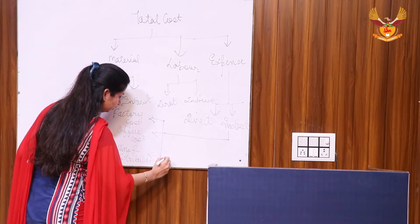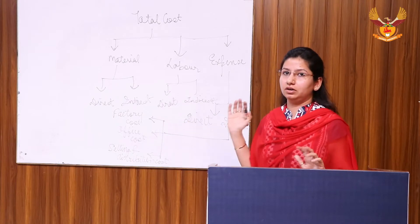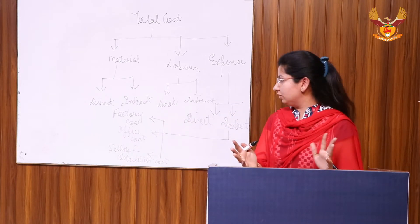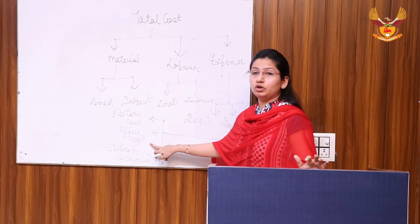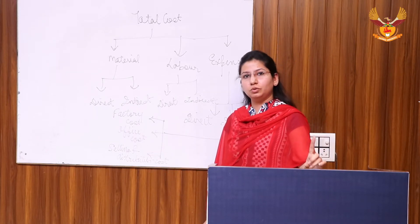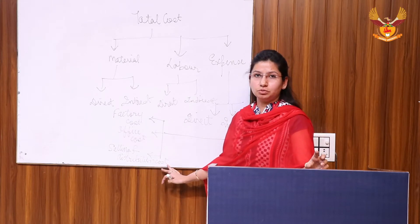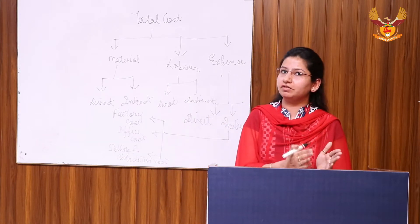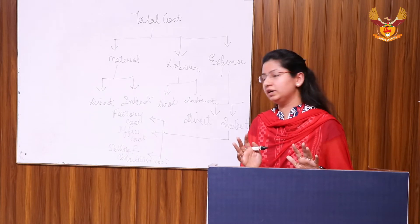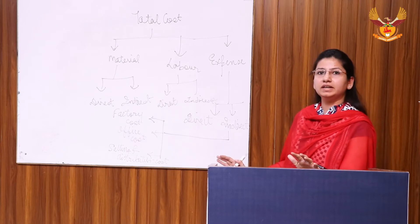Factory cost includes everything related to maintenance and any kind of machine-related charges. Office cost includes all office expenses such as furniture and the salary of office staff. Selling and distribution cost covers everything from delivery to advertisement — all of it is included in the selling cost. Now let's see how to calculate the total cost.